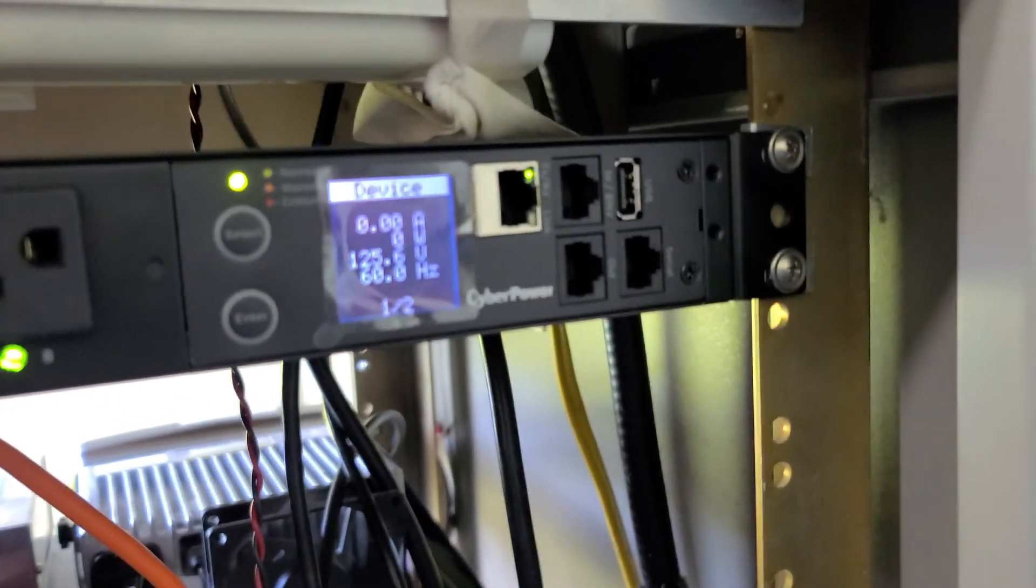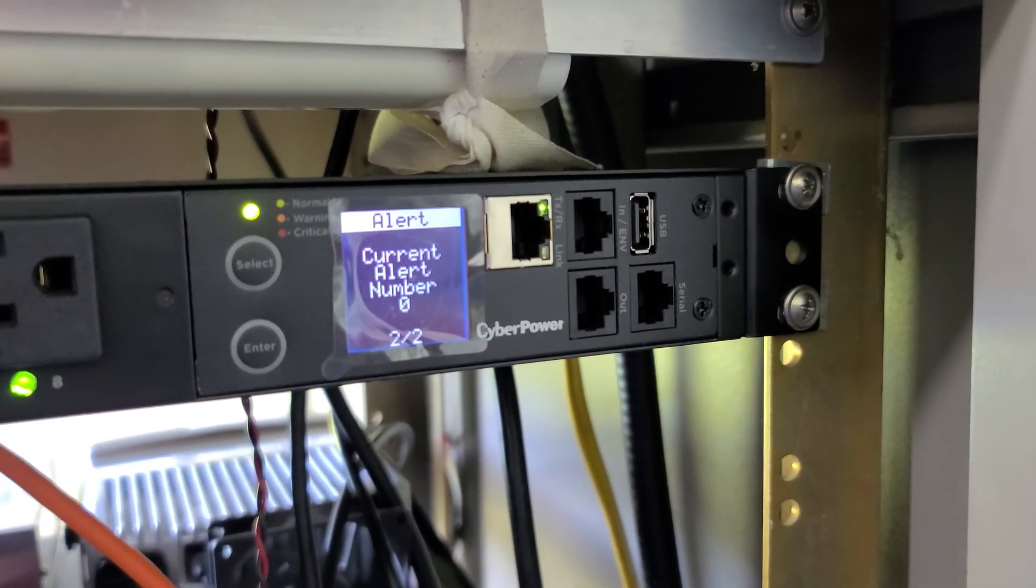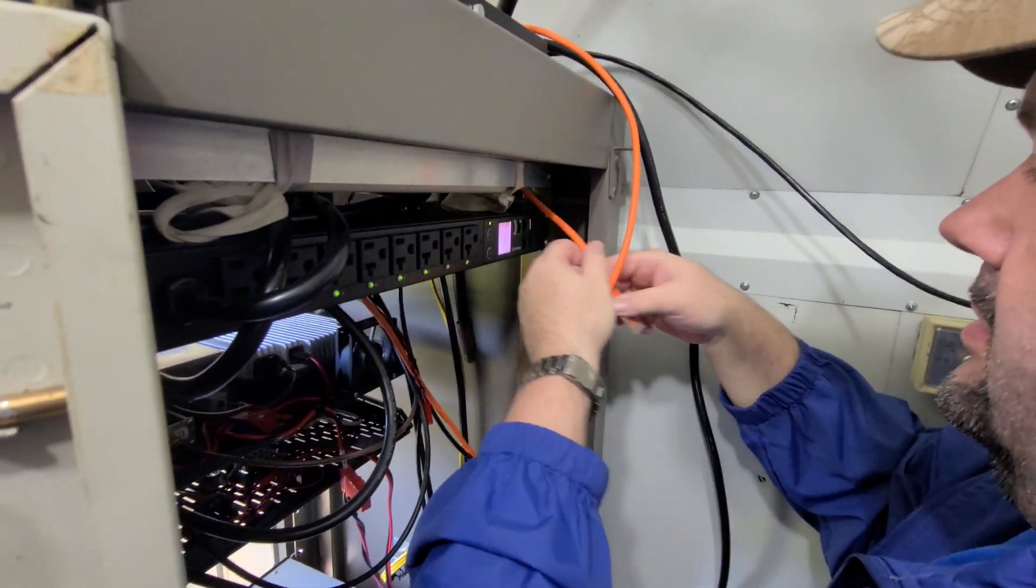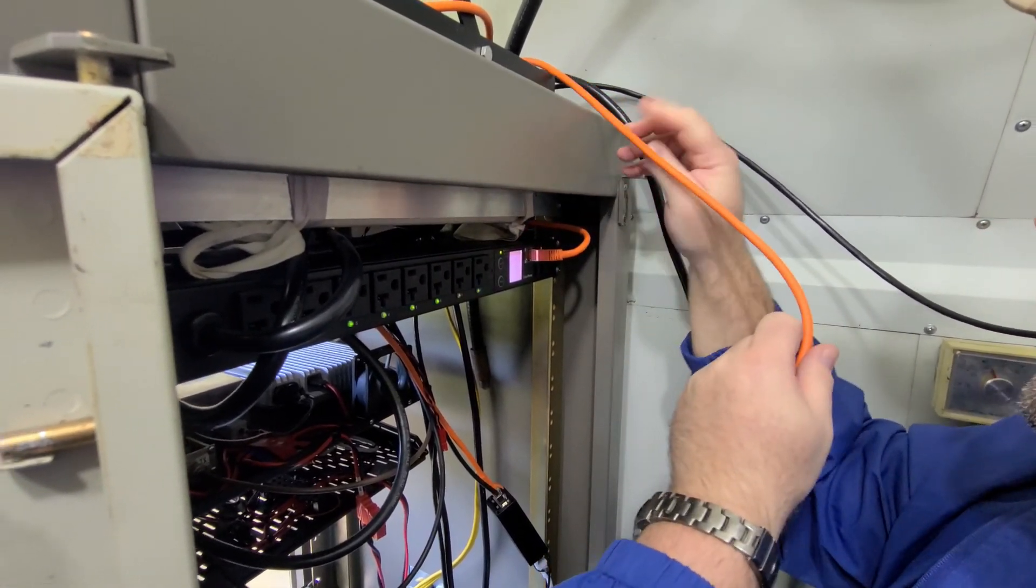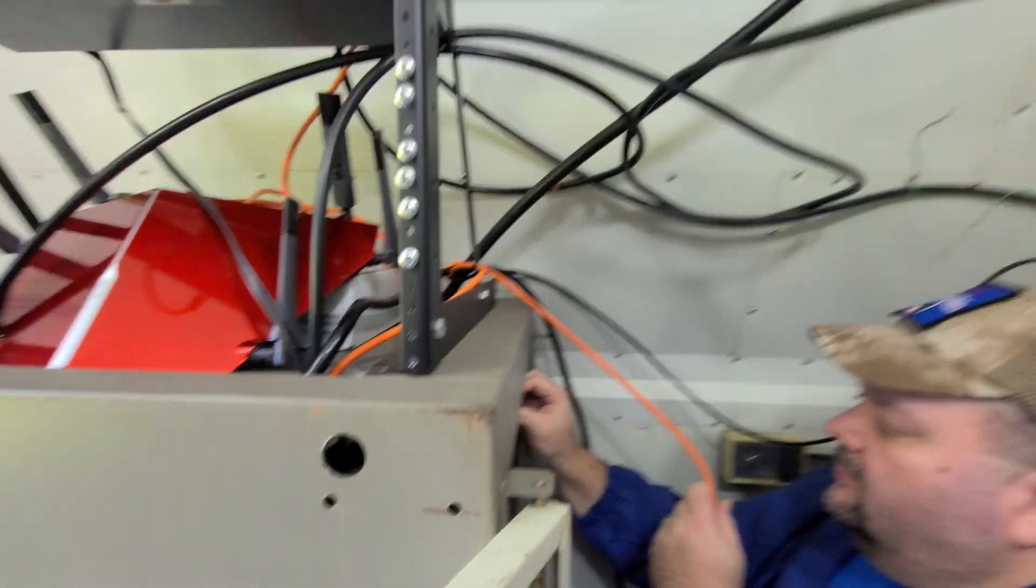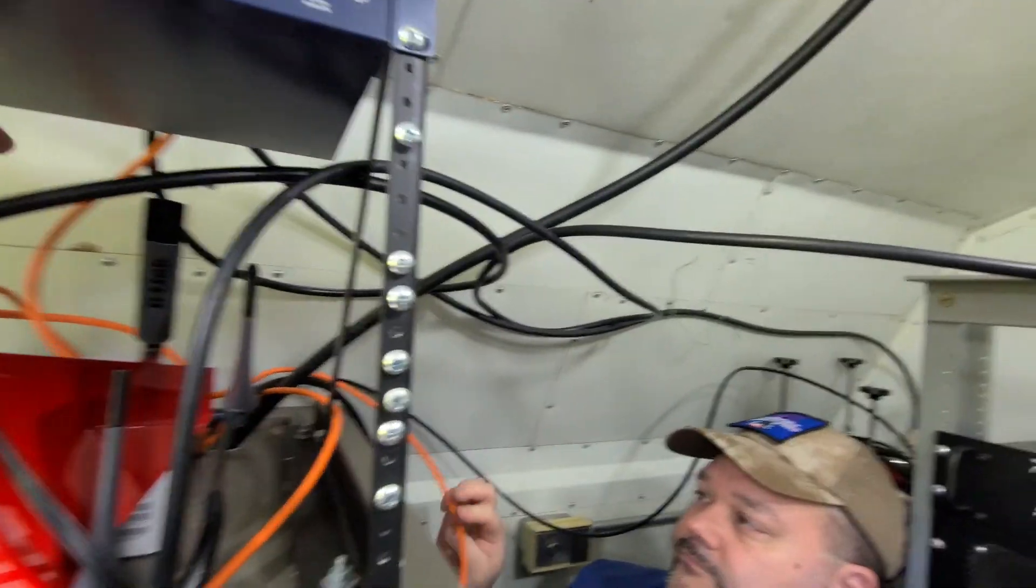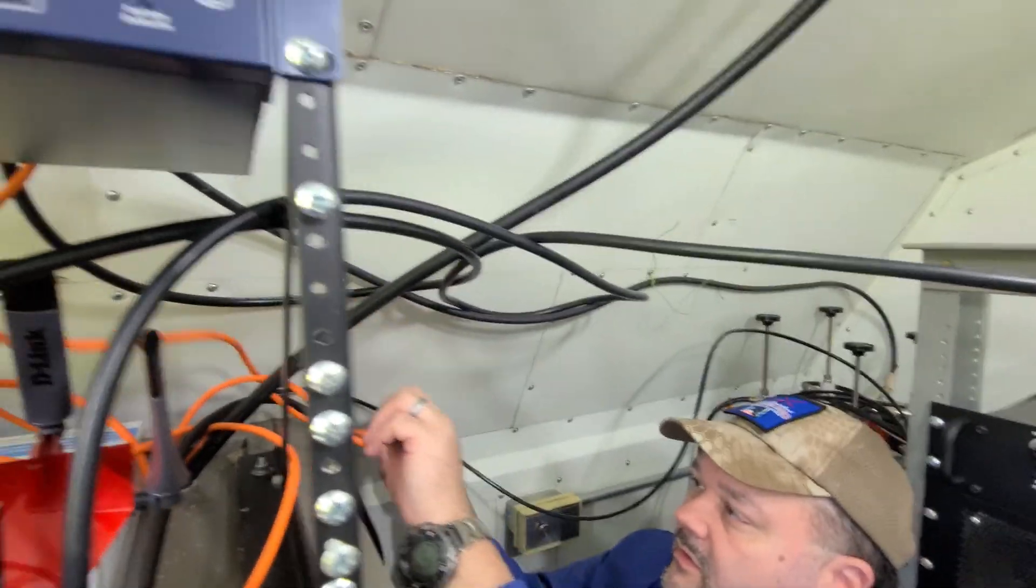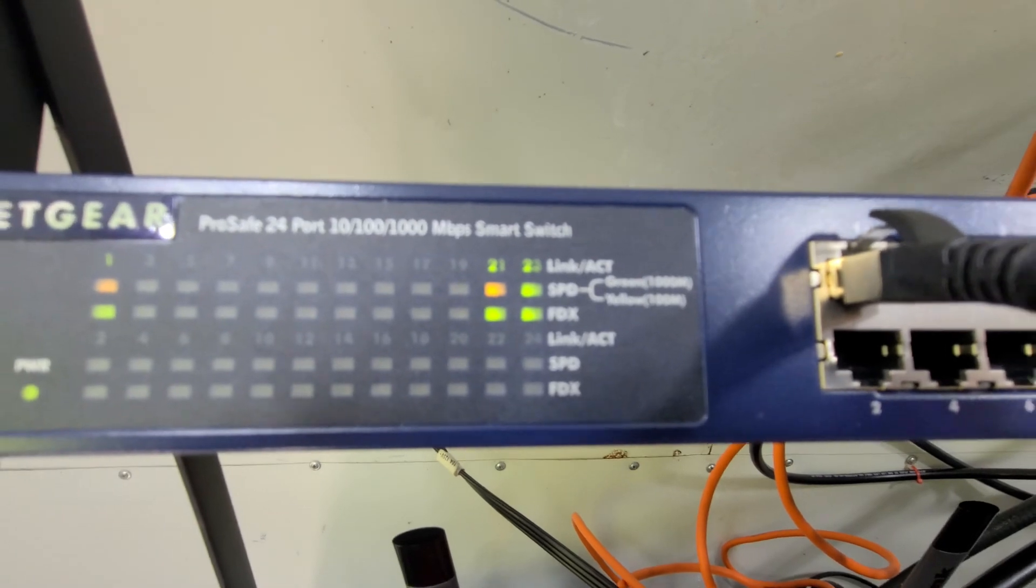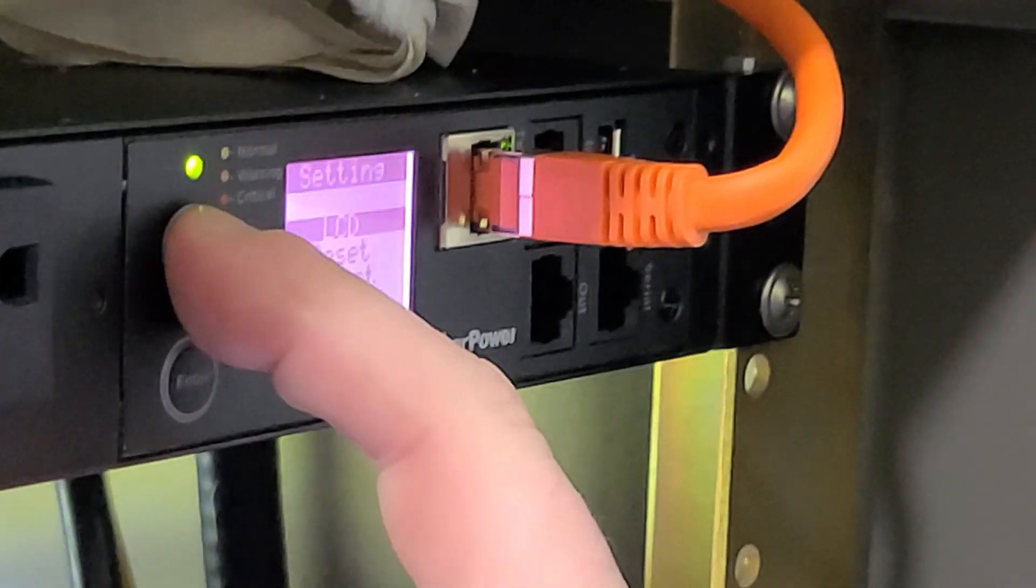Because the way the distribution unit works is each one of the power outlets can be independently managed through its web interface. And so if you have a piece of equipment that you suspect needs a reboot, you can log into this thing remotely, and you can say plug number four, reboot. Plug number seven, reboot. And you're not rebooting the entire thing. You're just rebooting that one plug.